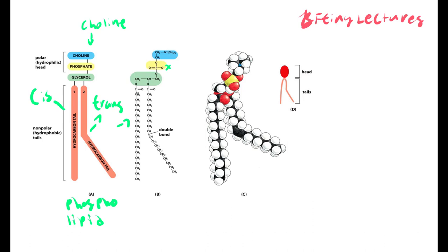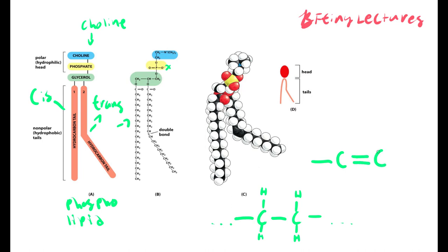If we say a fatty acid is saturated, that means all the carbons have the maximum number of hydrogens — each carbon has two hydrogens. If we are unsaturated, that means we have a double bond, and we do not have the maximum number of hydrogens possible. Notice that the saturated molecule has more hydrogens connected to carbons, while the unsaturated molecule does not.